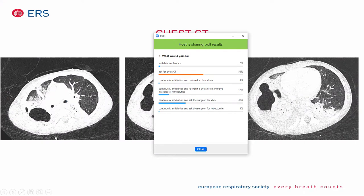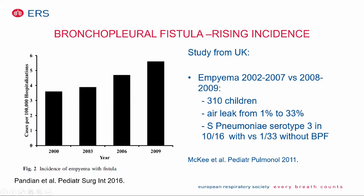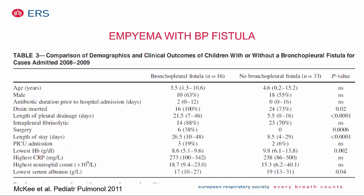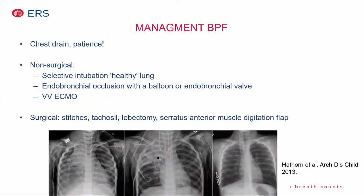As you can see on the CT, there was an air collection, a collapsed lung, and also some pleural effusion. Our child had a bronchopleural fistula, which was seen on the CT scan because of the large air leak. What can you do for a bronchopleural fistula? The most appropriate option is to put in a drain and wait — we had a patient who was sent home with a drain for almost two months. There are also non-surgical options, especially in very ill children: selective intubation of the healthy lung and bronchial occlusion. In very sick children you could go for ECMO. Surgical options are quite difficult; one of the most used is closing the leak with a flap of the serratus anterior.